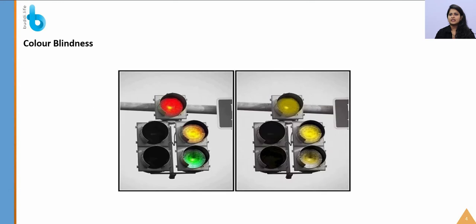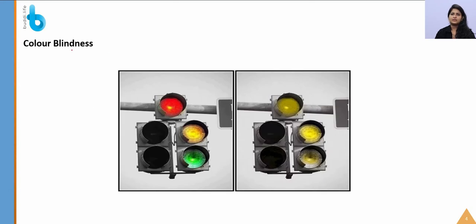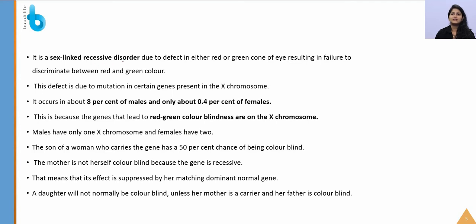The first Mendelian disorder we study is color blindness. The person will be unable to differentiate between red and green color. It is a sex-linked recessive disorder, predominantly seen in males, with only 0.4% of females affected. The defective gene is located on the X chromosome, so it is also called an X-linked recessive disorder.